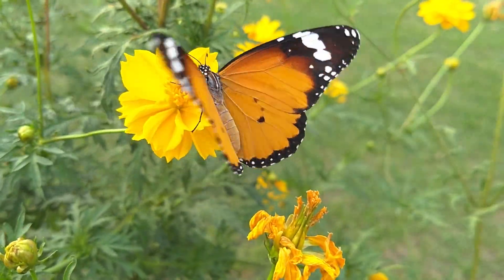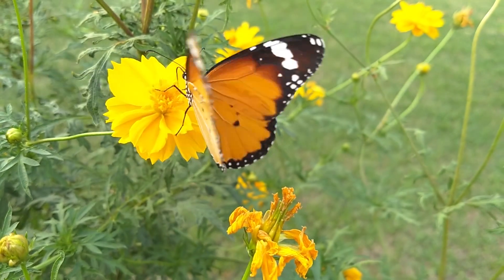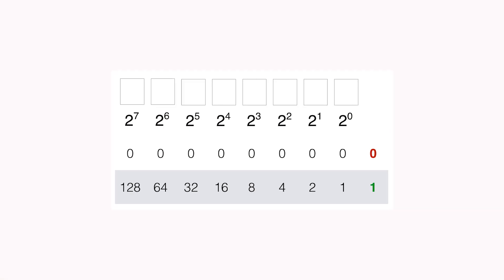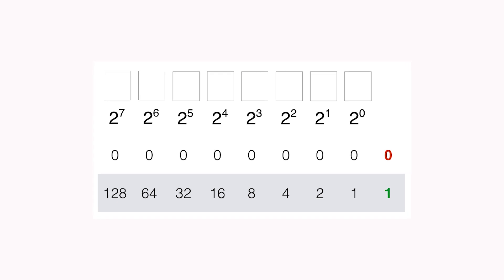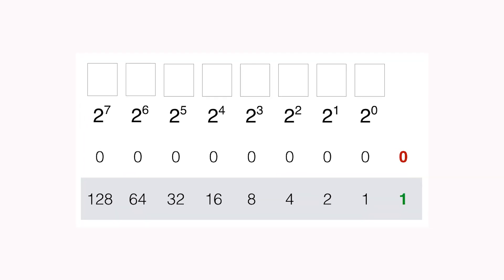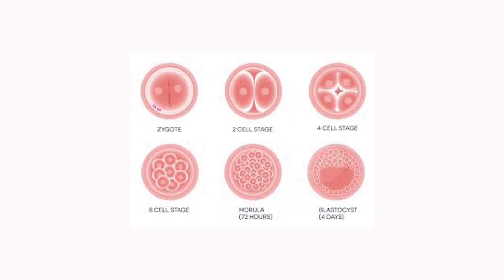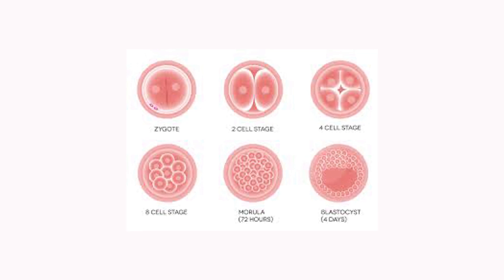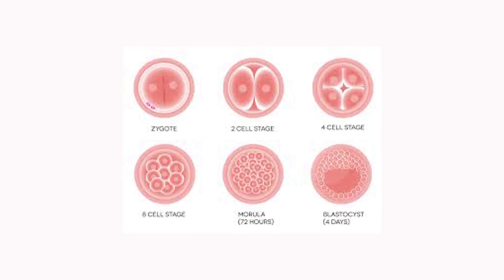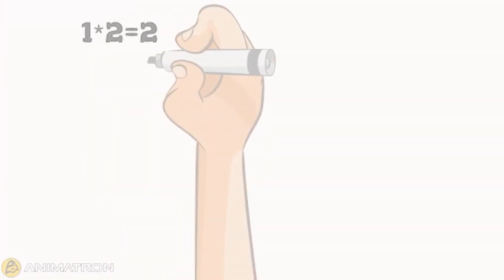One really important system that nature seems to obey is the power of two binary system, in which the pattern starts from 1 and continues by doubling the numbers. Cells and embryos develop following this sacred pattern: 1, 2, 4, 8, 16, 32, etc. Let me explain.